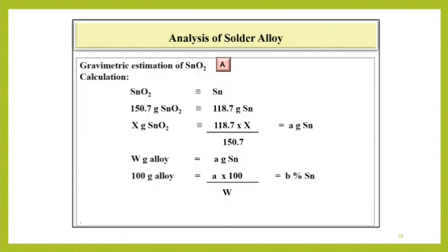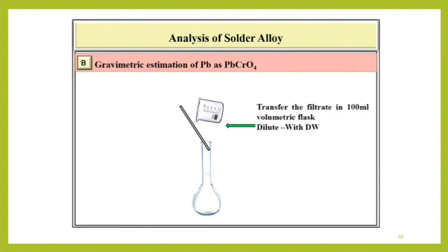Calculations. SnO2 corresponds to Sn. 150.7 gram SnO2 corresponds to 118.7 gram Sn. So, X gram SnO2 corresponds to 118.7 multiplied by X divided by 150.7 is equal to A gram Sn. W gram alloy contains A grams Sn. Therefore, 100 gram alloy contains A into 100 divided by W equal to B percent Sn.